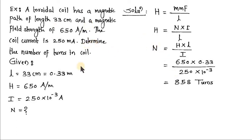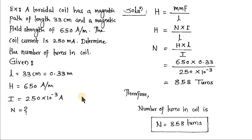This numerical shows that if we keep 858 turns in the coil and it carries 250 milliampere, it will produce a magnetic field of strength 650 ampere per meter. This is a simple design numerical where the number of turns of a coil can be determined.